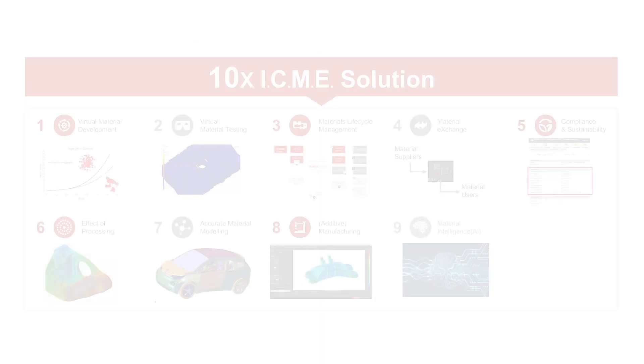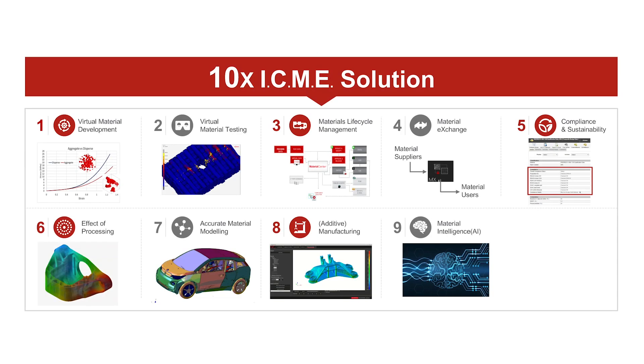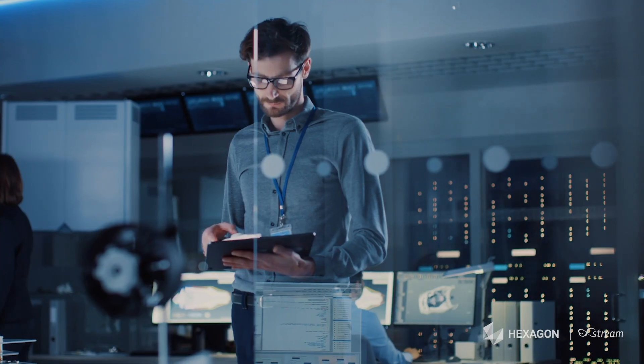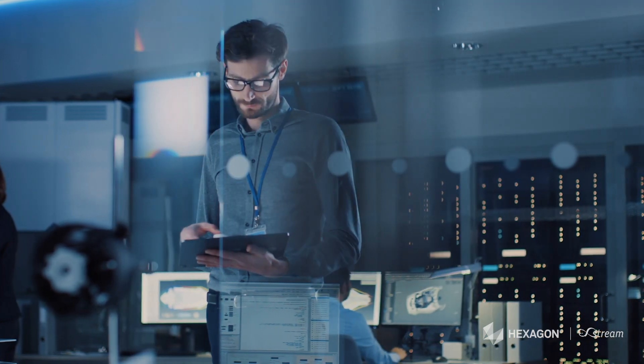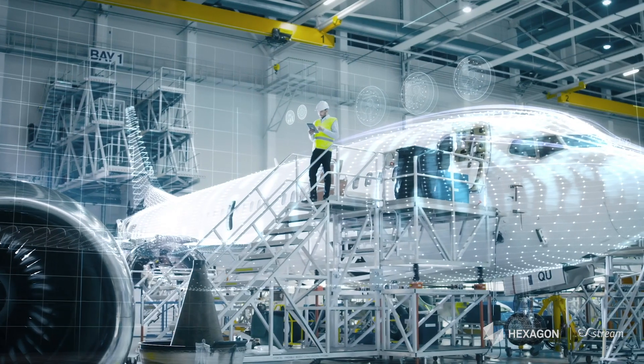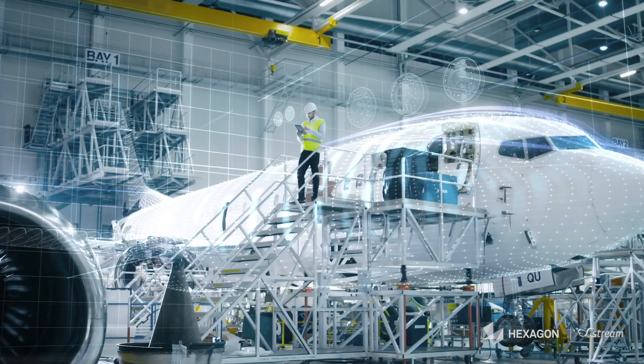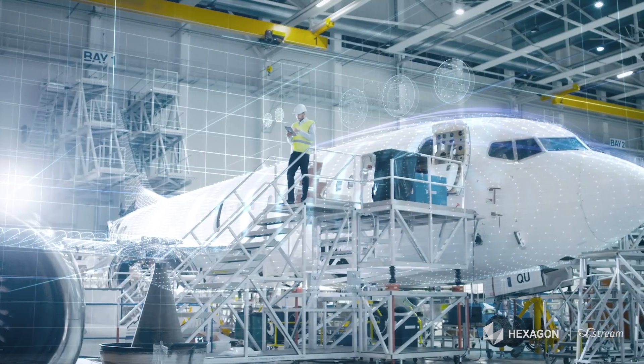The ninth block of our ICME strategy is material intelligence. Material intelligence is about using artificial intelligence for materials — combining physical testing and virtual testing to create an important data set. With this data set, we apply artificial intelligence to save time and to improve accuracy.